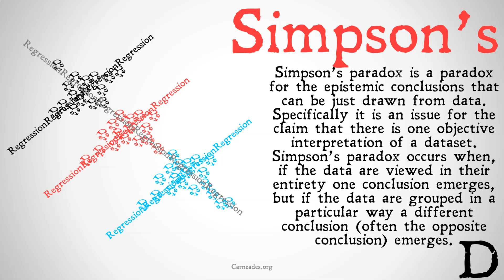Simpson's Paradox occurs when, if the data are viewed in their entirety, one conclusion emerges. But if the data are grouped in a particular way, or if particular variables are controlled for in a regression, a different conclusion — often the completely opposite conclusion — emerges.